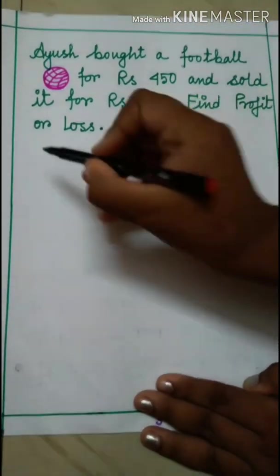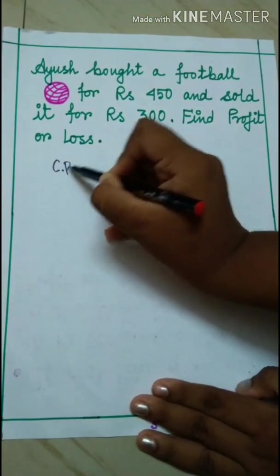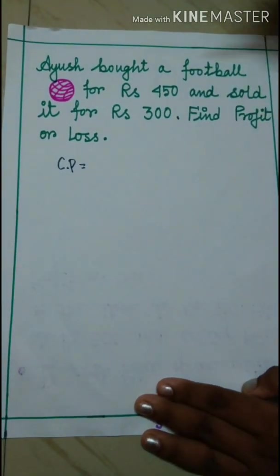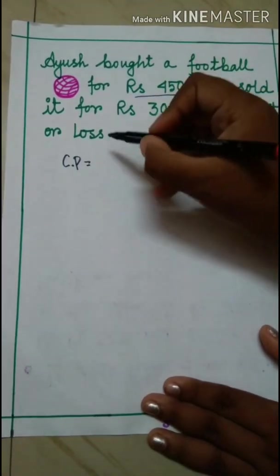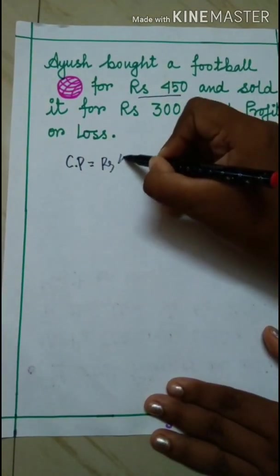Like the previous one, at first we have to note down the CP. At first I am noting down the CP here. Ayush bought a football for Rs 450. That means CP is Rs 450.